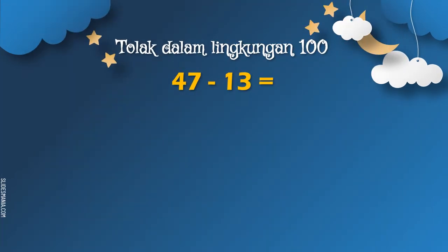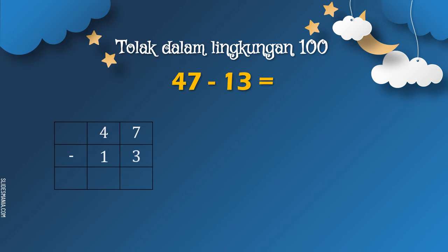Soalan seterusnya: 47 tolak 13 sama dengan... Kita tulis dalam bentuk lazim. 47 tolak 13. Pastikan nombor ditulis mengikut rumah yang betul — di belakang rumah sa dan di depan rumah puluh. Buatkan 2 garisan. Sekarang kita selesaikan dulu yang di sebelah kanan, iaitu 7 tolak 3.